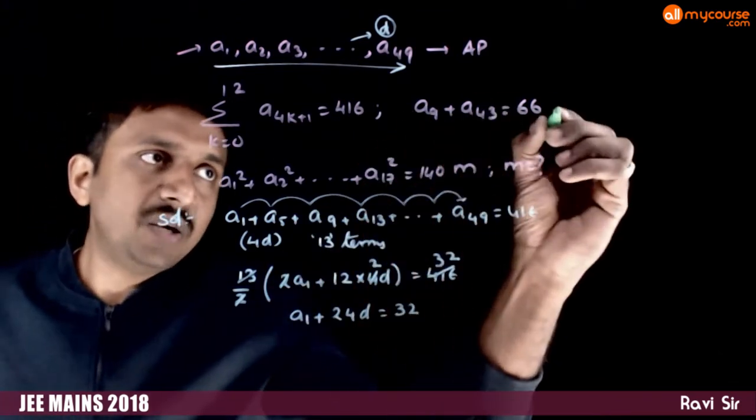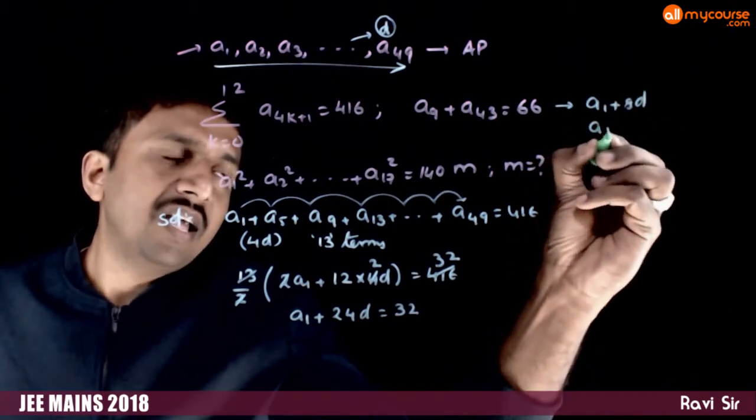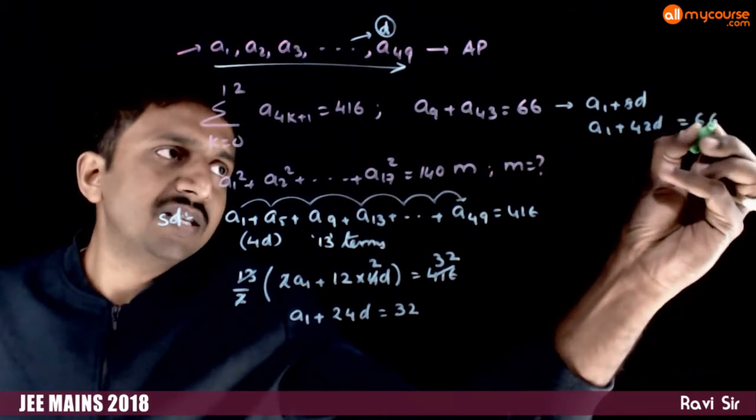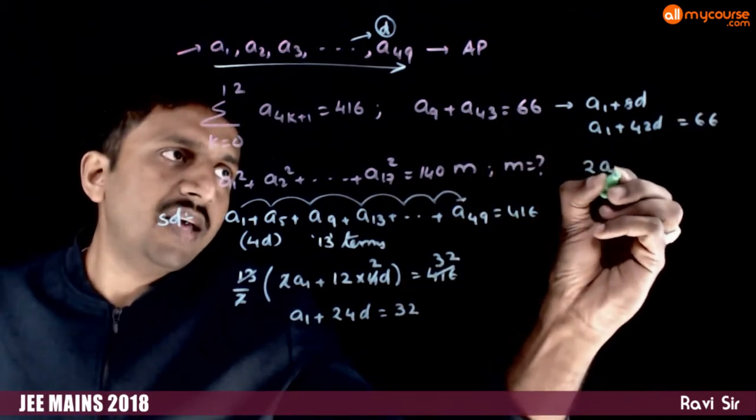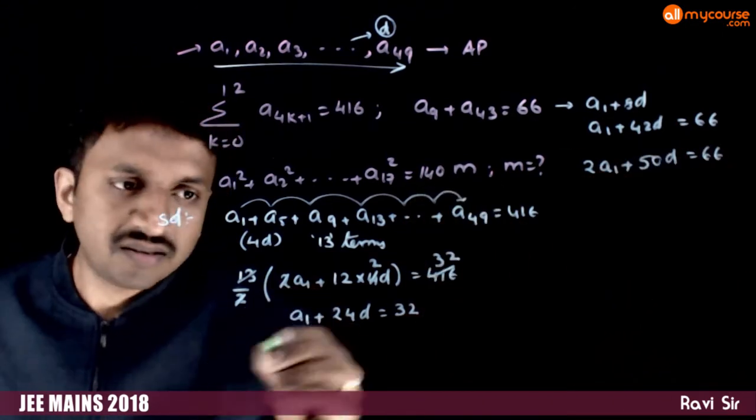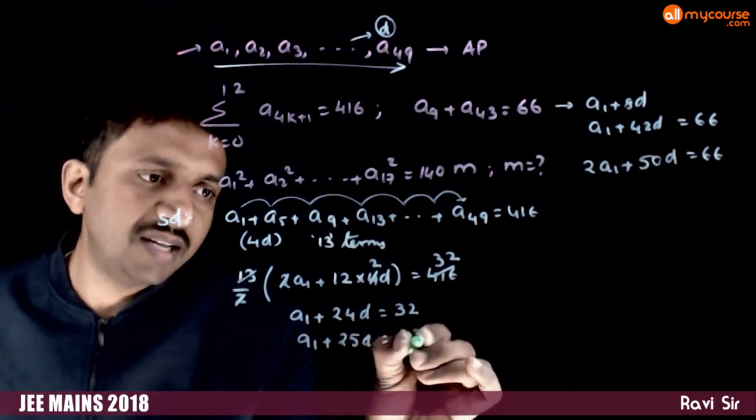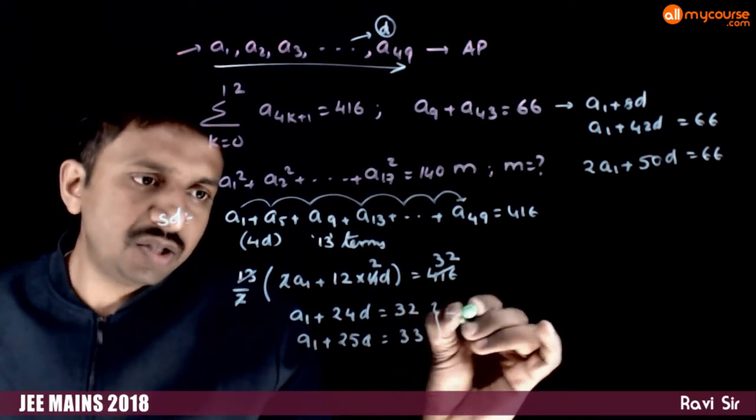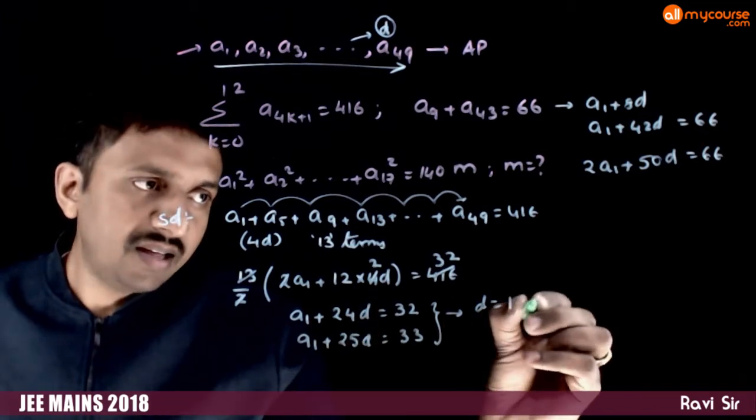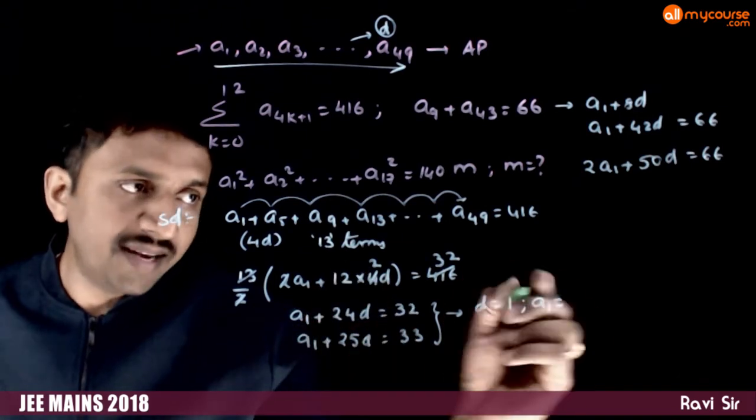a9 is a1 plus 8 times d, a43 is a1 plus 42 times d. So the sum is equal to 66. Therefore a1 plus 25d is equal to 33. If you solve these two, you get d is equal to 1 and a1 is equal to 32 minus 24 is 8.